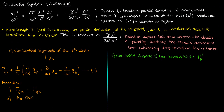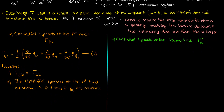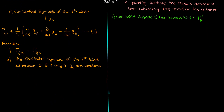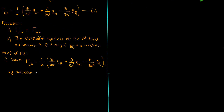The second property is that if and only if the metric tensor components are all constants, then the Christ-awful symbols of the first kind are all zero. The first part of proving this is pretty trivial: since the metric tensor components are all constants, the first kind Christ-awful symbol — whose equation contains derivatives of those metric tensor components — becomes zero because the derivative of a constant is zero.